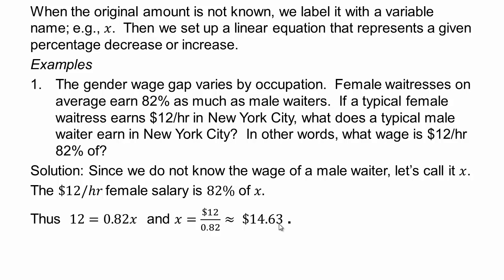So male waiters earn $14.63 per hour, versus female waitresses earn 82% of that, which is $12 an hour. It's always important to end your answer in words. So the male waiter makes $14.63 per hour.